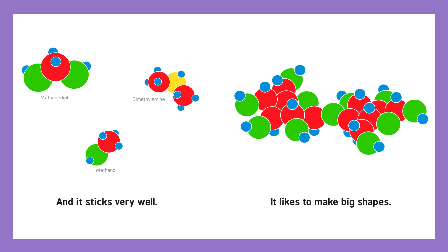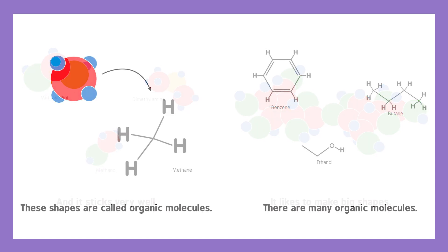Methanethyl, methanol, dimethylamine. These shapes are called organic molecules. There are many organic molecules. Methane, benzene, ethanol, butane.